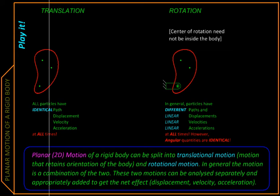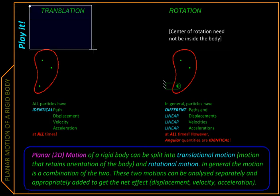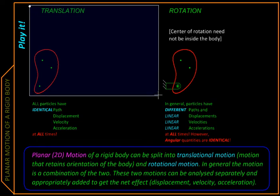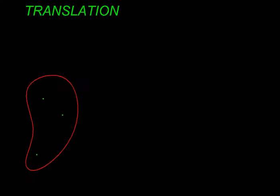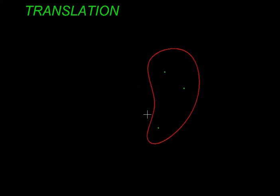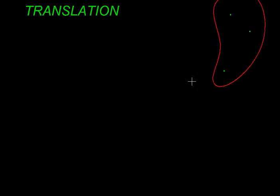In translation, a body moves not necessarily along a straight line, but without changing its orientation. So there will not be any tilt, but the body will just move parallel to itself without changing its orientation.